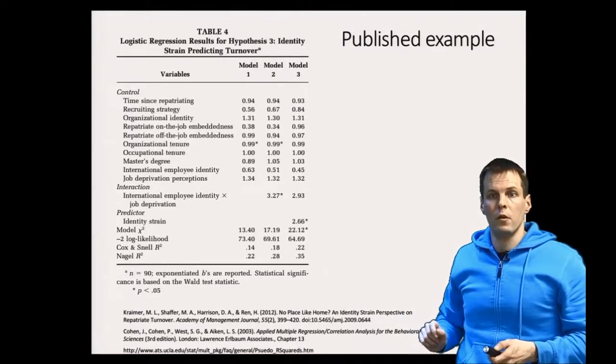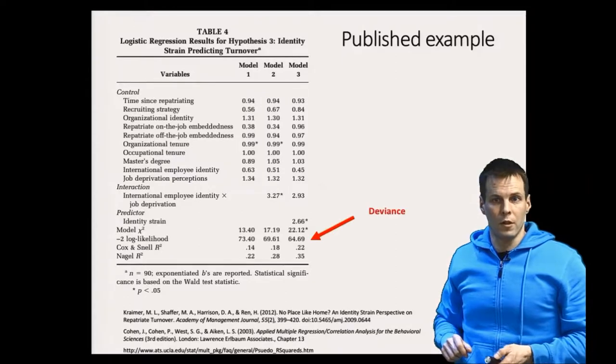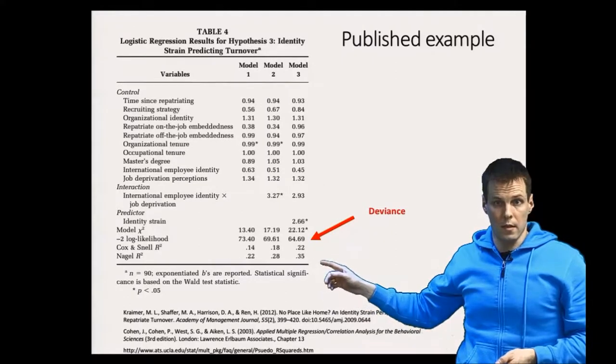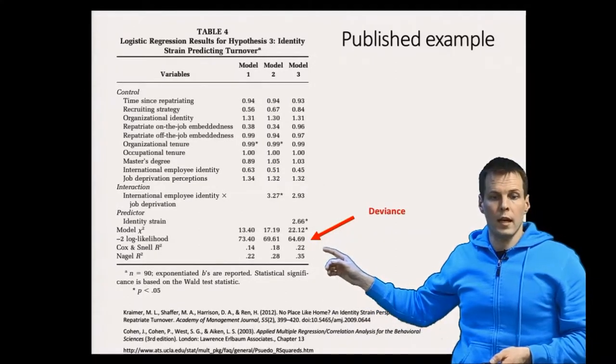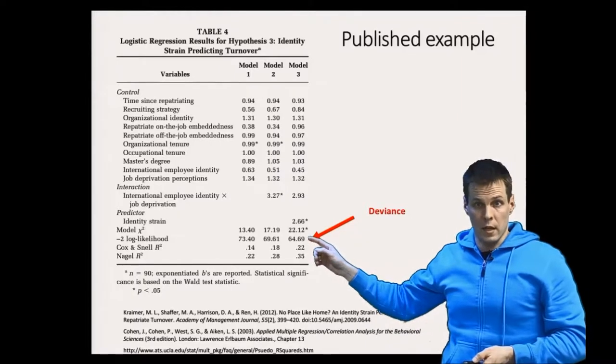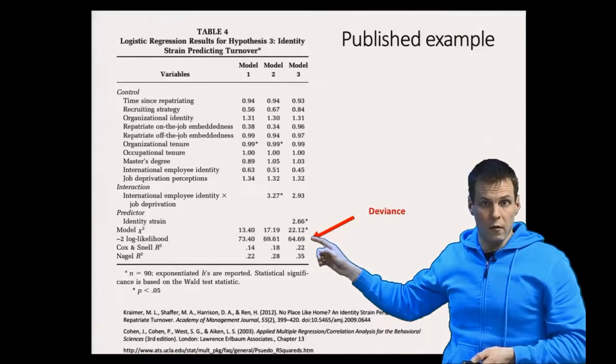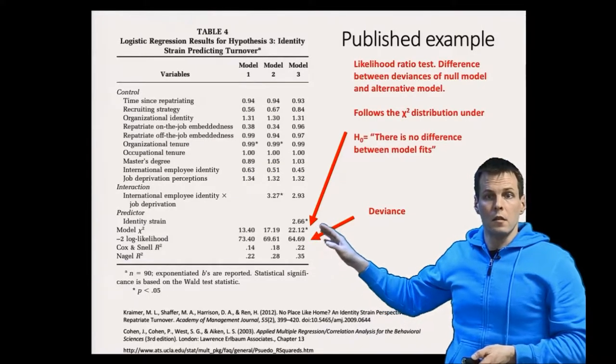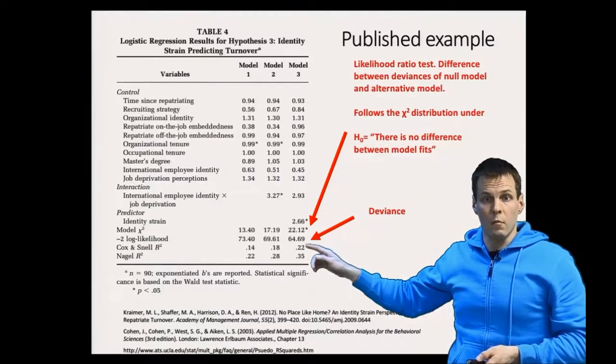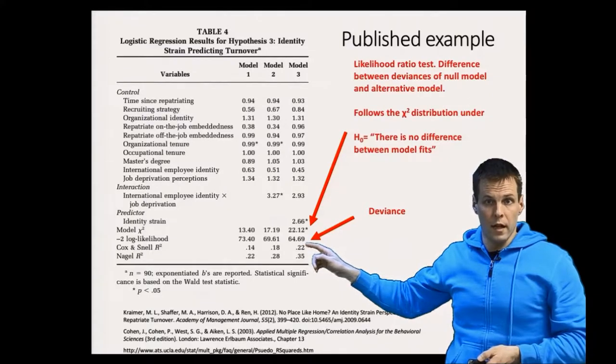First of all we have minus 2 times log likelihood that's the deviance that I discussed in one video. Then we have a chi-square test from a likelihood ratio test that I discussed also in another video that tests whether this model explains the data better than a null model.